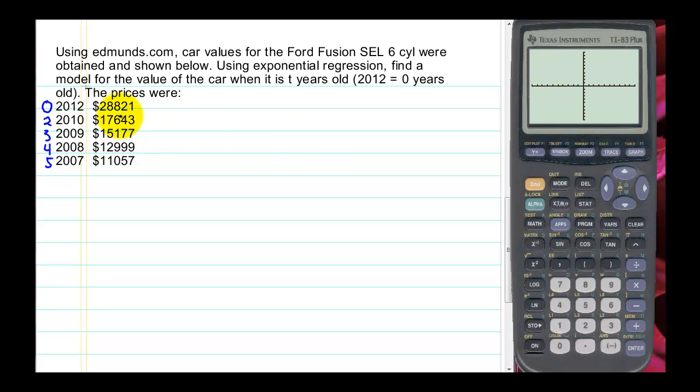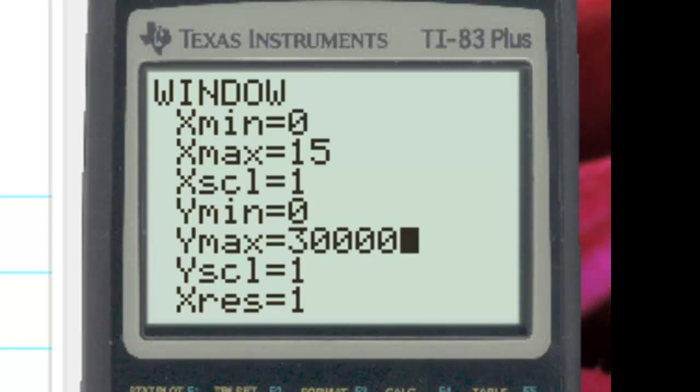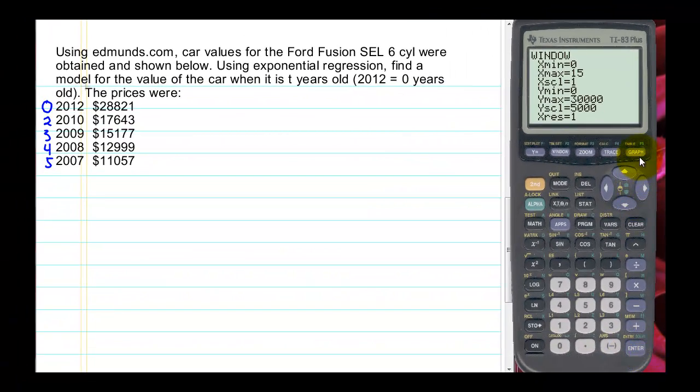And we can press graph. Now we're not going to see anything here because our Y values are quite large. So we need to adjust the window. We're not going to be looking at cars with negative ages. So let's look at car prices from, say, 0 to, I don't know, 15 years, maybe. And our Y values, the lowest value it's going to be would be 0. And our highest value is slightly more than this. So we could put in, say, 30,000. And to get the tick marks on the Y axis, we'll set the Y scale to about 5,000. And now let's press graph.